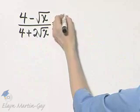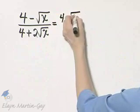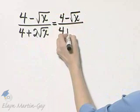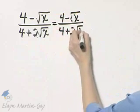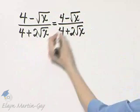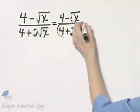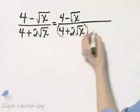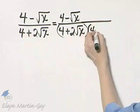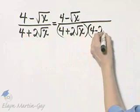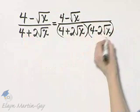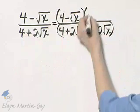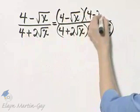Let me rewrite this. I have 4 minus square root of x over 4 plus 2 square root of x. What is the conjugate of the denominator? The conjugate is 4 minus 2 square root of x. So I multiply by 4 minus 2 square root of x in the denominator and the exact same thing in the numerator.